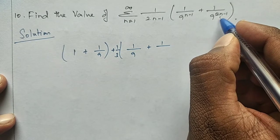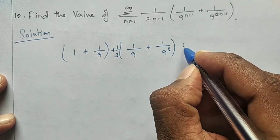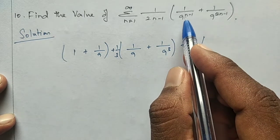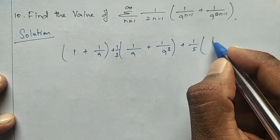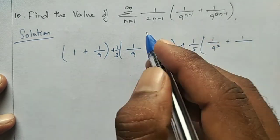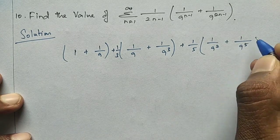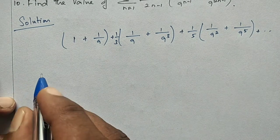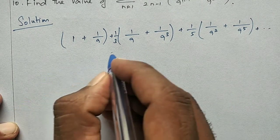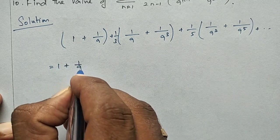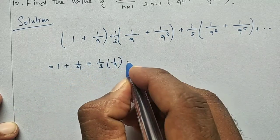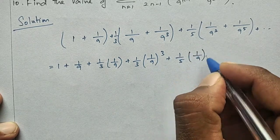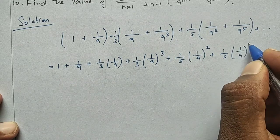Plus, continuing: 1 by 5 into 1 by 9 whole square, plus 1 by 5 into 1 by 9 whole power 5, plus etc. So we can write: 1 plus 1 by 9 is equal to 1 plus 1 by 9 plus 1 by 3 into 1 by 9, plus 1 by 3 into (1 by 9) whole cube, plus 1 by 5 into (1 by 9) whole square, plus 1 by 5 into (1 by 9) whole power 5, plus etc.